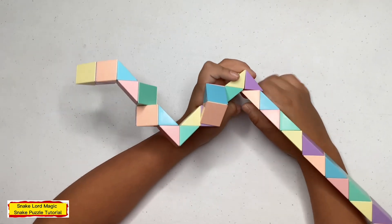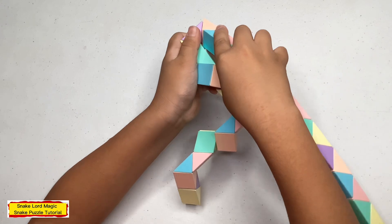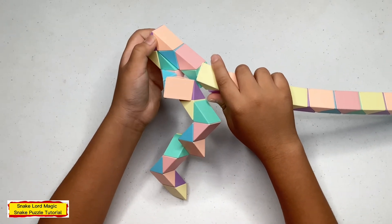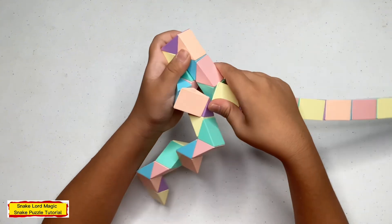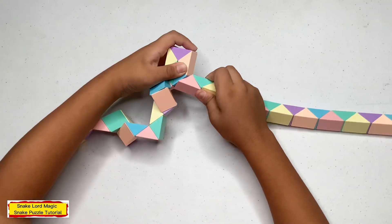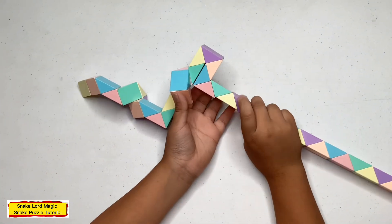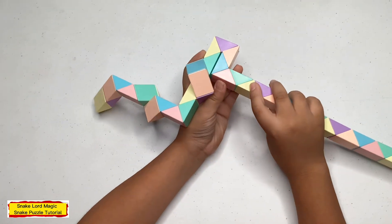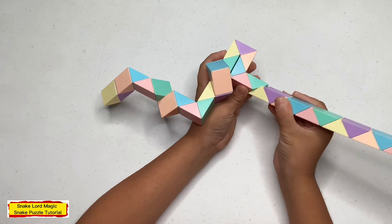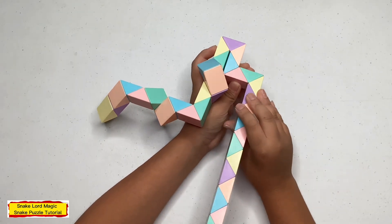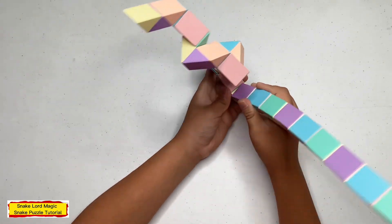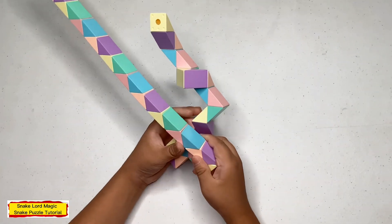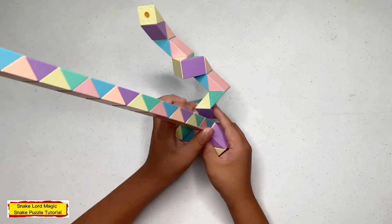Now turn this peach one towards you. Now count two, one, two and turn this peach one to the right. Now count two, one, two and turn this one towards you. Now turn this one to the left. Now turn this one up.